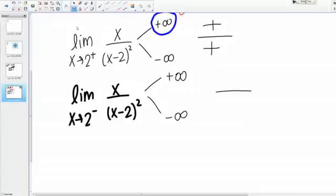Let's think about the top of the fraction. For values that are just slightly less than 2, the top is going to be positive. And what about the bottom? Well, the bottom is squared, so it's always going to be positive. If I plug in 1.99 minus 2 and square it, that's a positive number. So once again, positive over a positive gives me a positive overall.